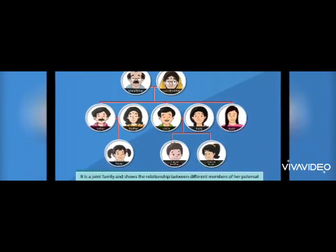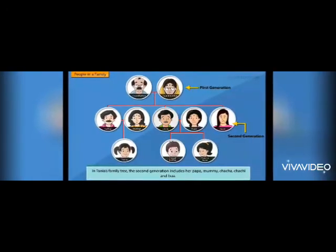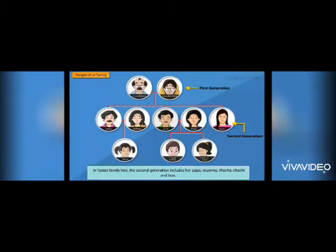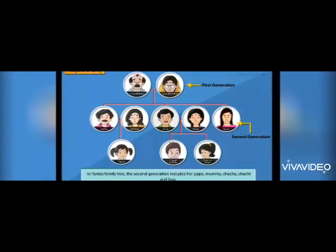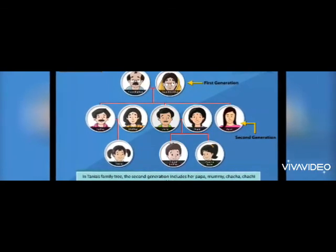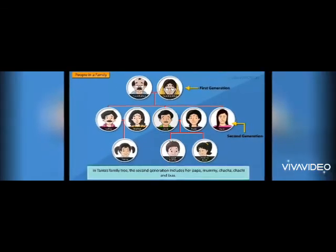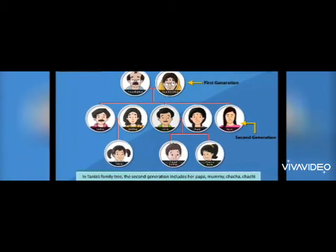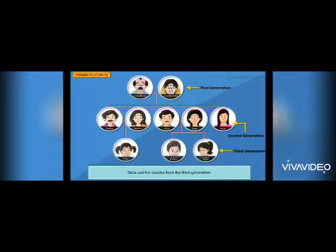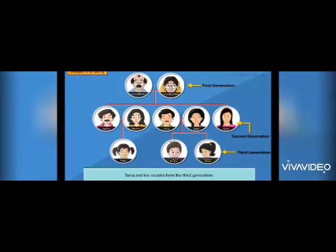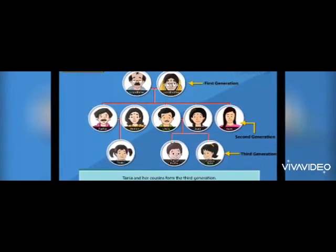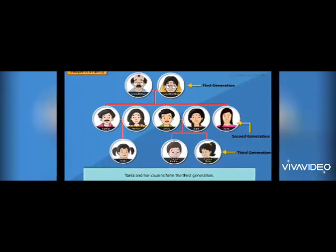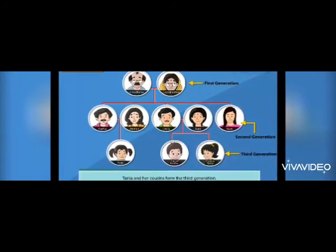Let's take an example of Tania's family. In the first generation, grandfather and grandmother are there. In the second generation, it includes her papa, mommy, cha-cha, cha-chi, and bua. And Tania and her cousins form the third generation. So first generation mein dada dadi hain, second generation mein Tania ke papa, mommy, cha-cha, cha-chi and bua hain, and third generation mein Tania aur uske cousins hain.